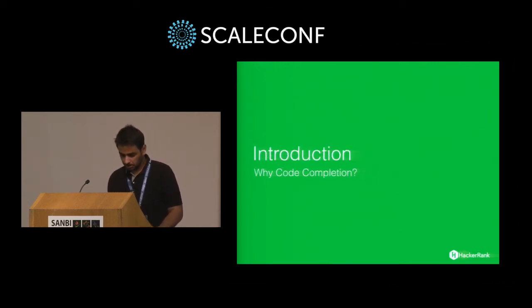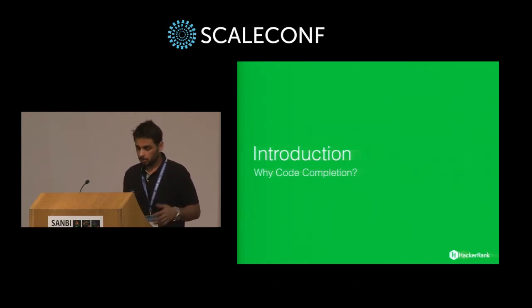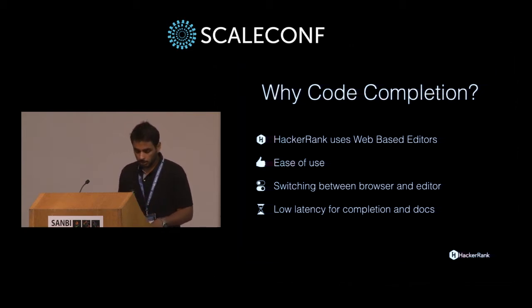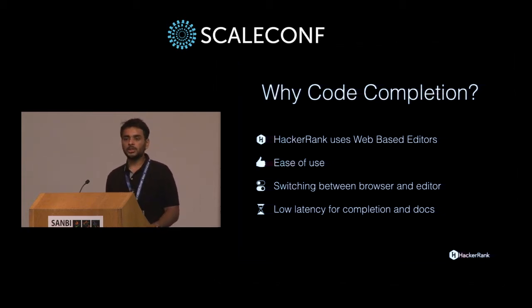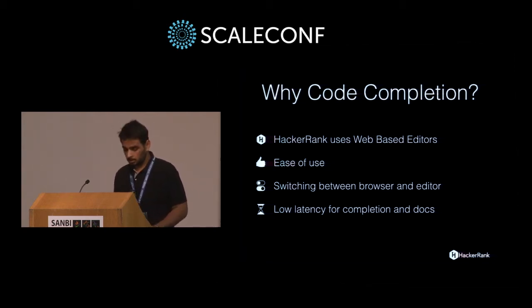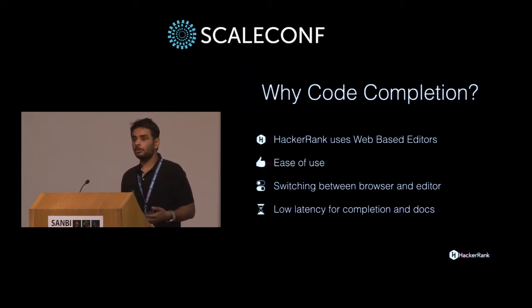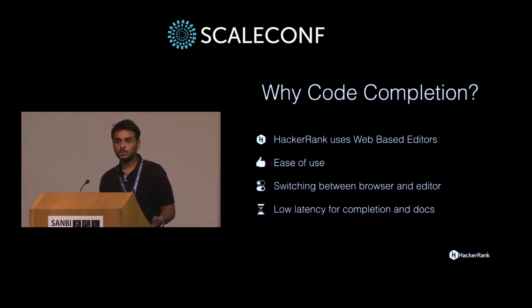So why do we need code completion at HackerRank? HackerRank uses web-based editors — HTML-based editors like ACE and CodeMirror — in the browser, so that any user taking a test or writing code in the browser is able to use code completion efficiently. It also makes it easier to type as fast as possible. Since HackerRank is mainly focused on competitive programming, you need to type code fast and focus mainly on algorithms instead of syntax.